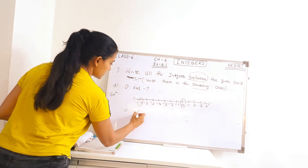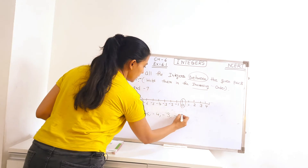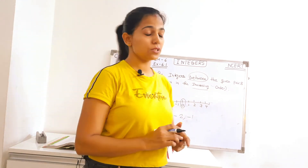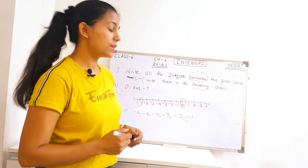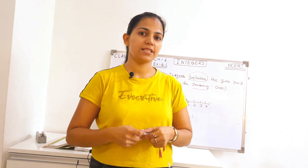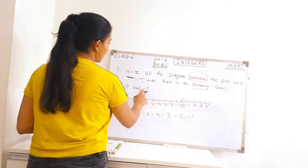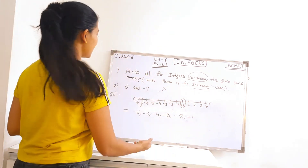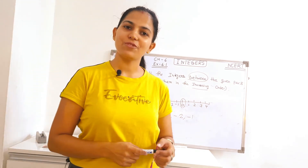Starting from minus 6: minus 6, minus 5, minus 4, minus 3, minus 2, and minus 1. That's it. Remember in this question we cannot write 0 and minus 7, because the statement says we need to write the integers between 0 and minus 7 — 0 and minus 7 are not included. So these are the integers in increasing order. Part A is done.